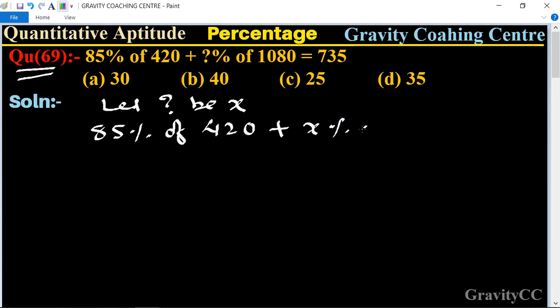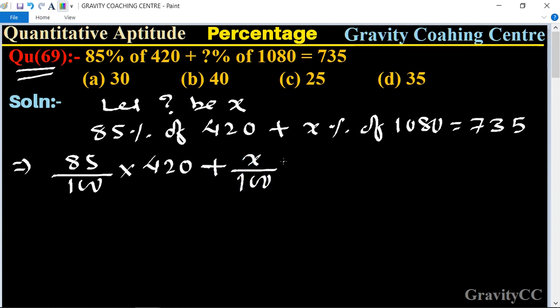This implies that 85 upon 100 into 420 plus x upon 100 into 1080 is equal to 735. Here we cancel the zeros and divide by 2, getting 21, and 5 and 17 gives 85.